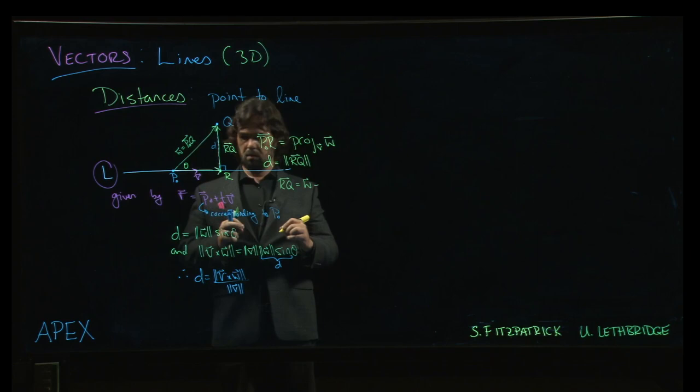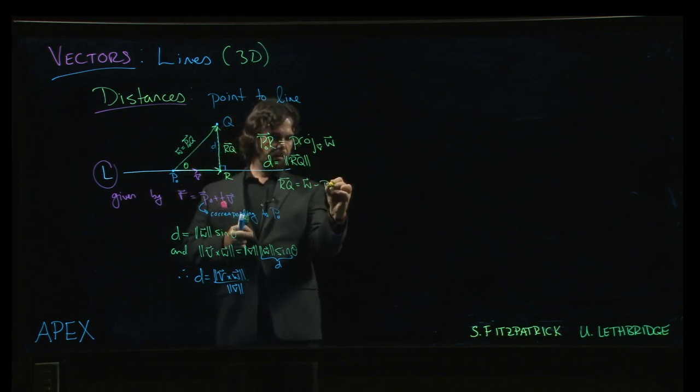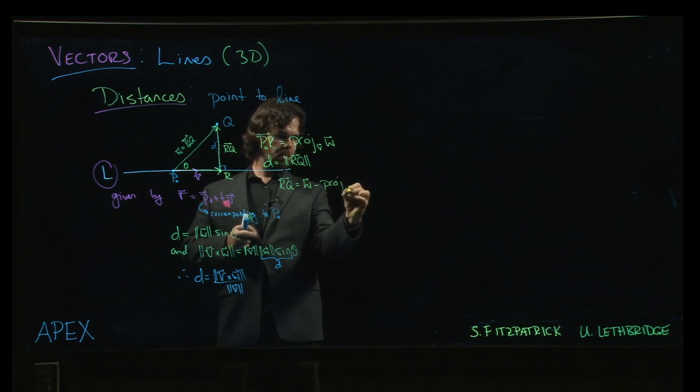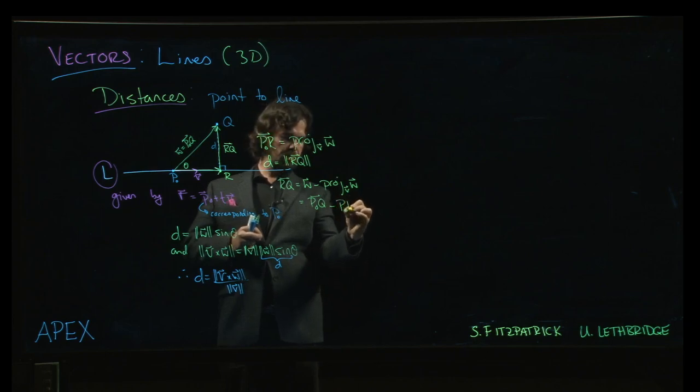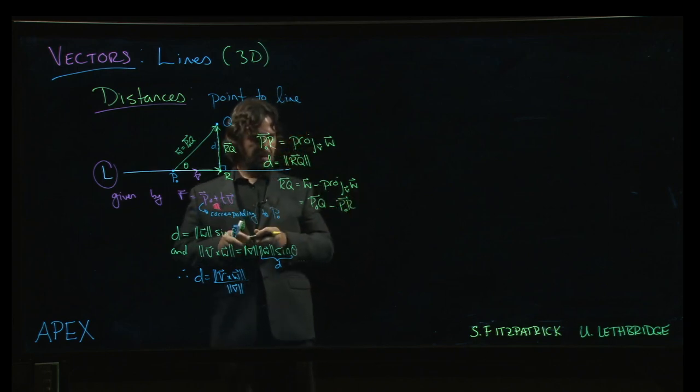And so we know how to find this vector. We take the vector W, P-naught to Q, and we subtract off the projection. So in other words, we take the vector from P-naught to Q and we subtract the vector from P-naught to R.